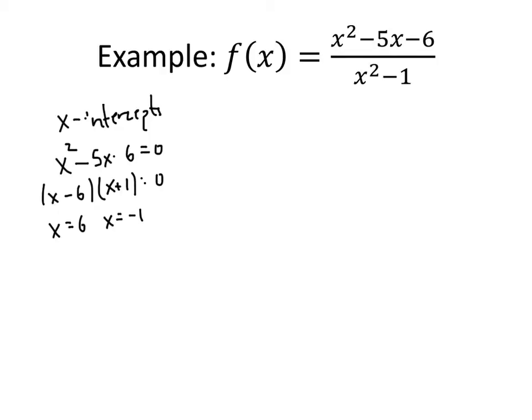But the problem is this function doesn't have two x-intercepts. This is actually wrong. And the reason it's wrong is because this fraction, this function here, is not in lowest terms. And the fact that this function isn't in lowest terms causes a problem in this case. So it's not in lowest terms. So let's see what's going on here.